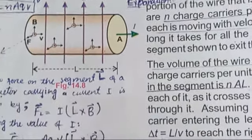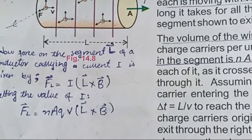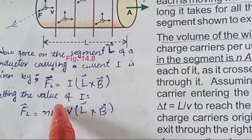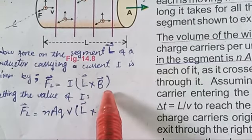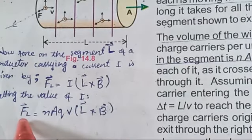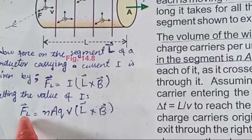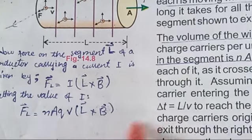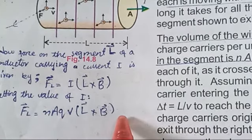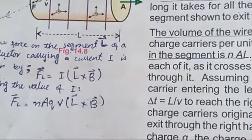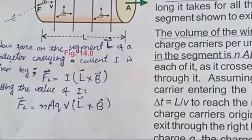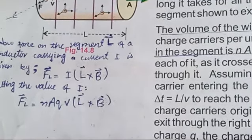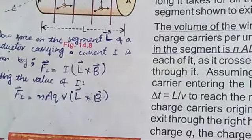The force on the conductor having length L is F = I·L×B. Substituting the value of I, the force on the conductor of length L becomes F_L = N·A·Q·V·L×B. Yesterday we completed this topic up to equation 14.7, and today we will continue with the rest of the topic.